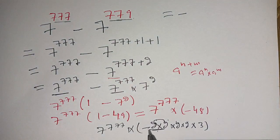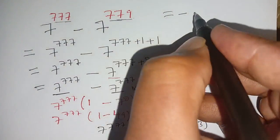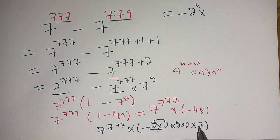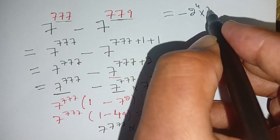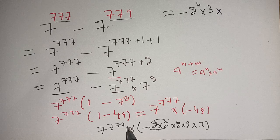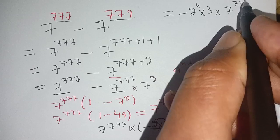So the final answer is -2^4 × 3 × 7^777.